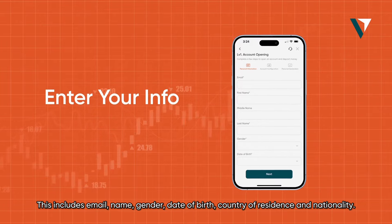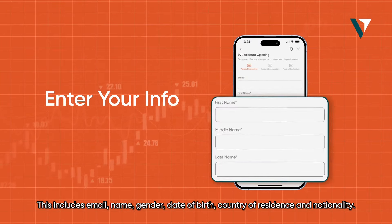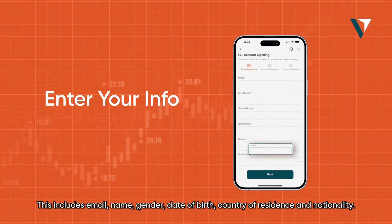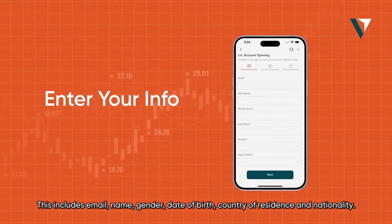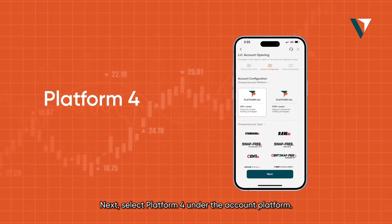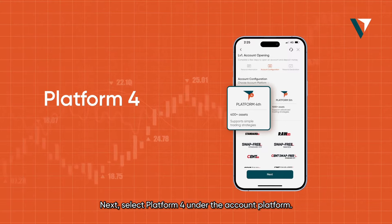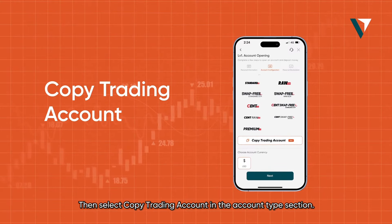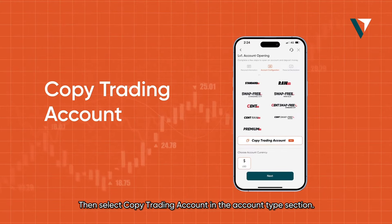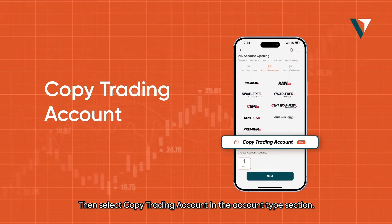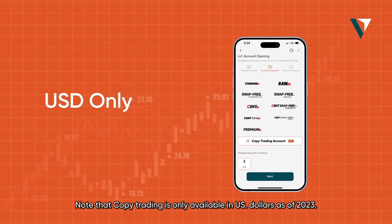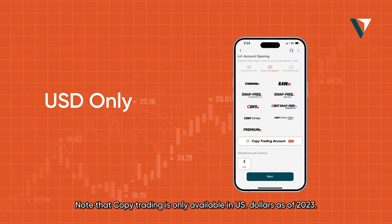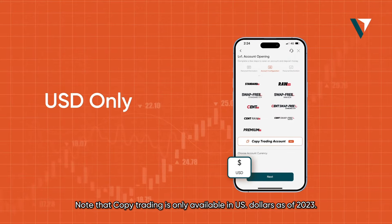This includes email, name, gender, date of birth, country of residence, and nationality. Next, select the platform under the account platform section. Then select copy trading account in the account type section. Note that copy trading is only available in US dollars as of 2023.